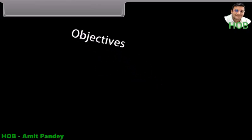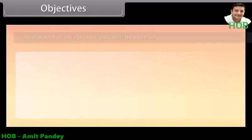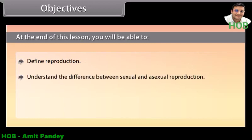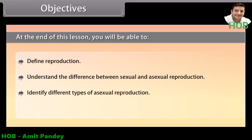Objectives. At the end of this lesson, you will be able to: define reproduction, understand the difference between sexual and asexual reproduction, identify different types of asexual reproduction, and identify various events of sexual reproduction.